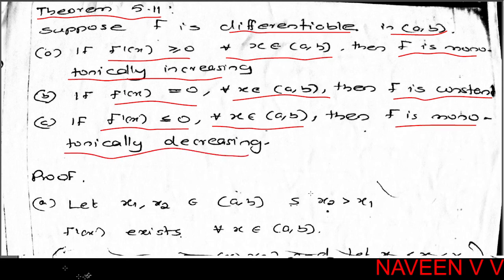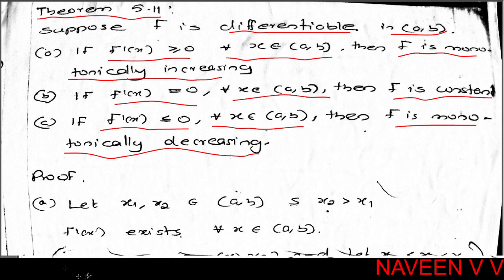If f is differentiable on open interval (a, b), it is a real-valued function. We approach this in three cases. First case: for any real number x in open interval (a, b), if f'(x) ≥ 0, then f is monotonically increasing. Second case: if f'(x) = 0, then f is constant. Third case: if f'(x) ≤ 0, then f is monotonically decreasing.